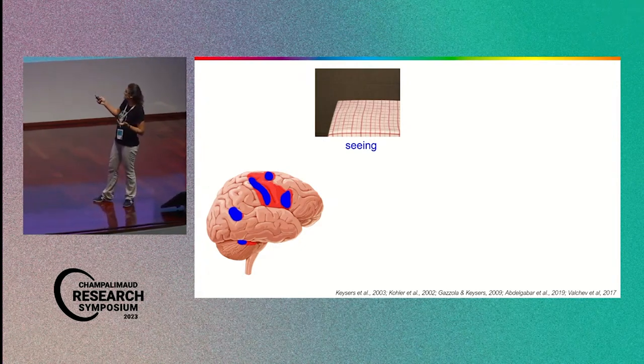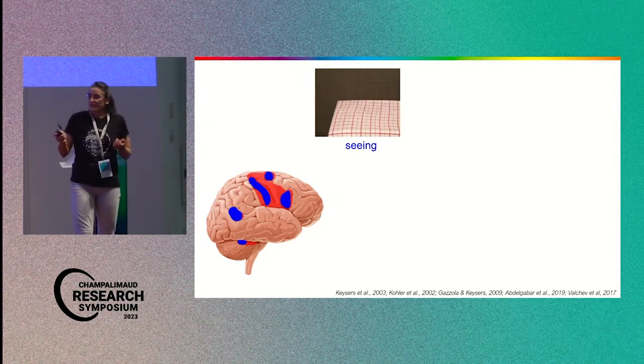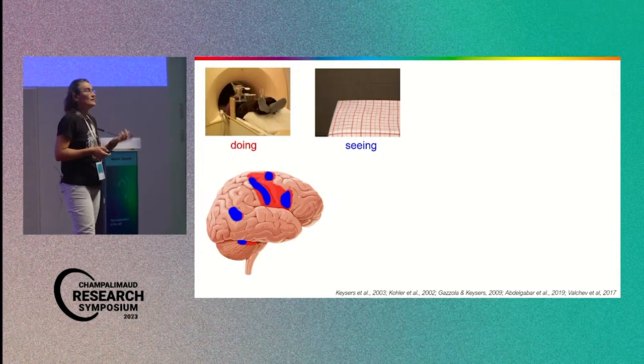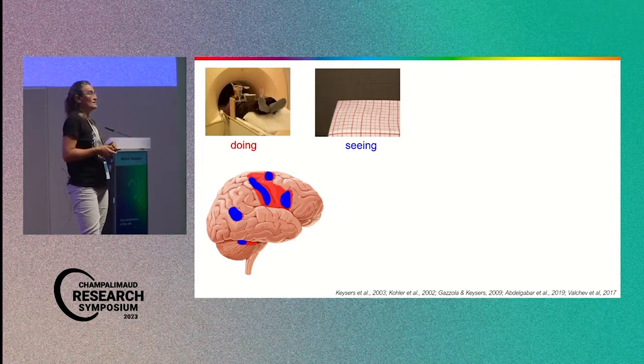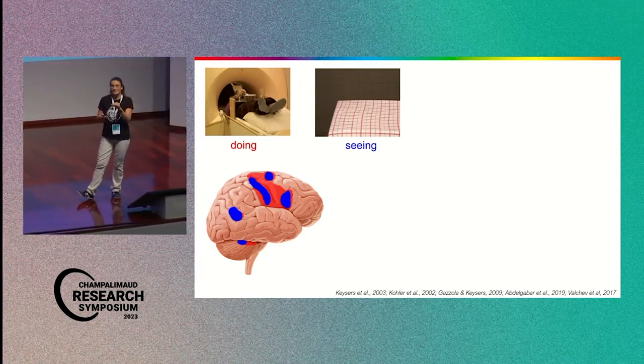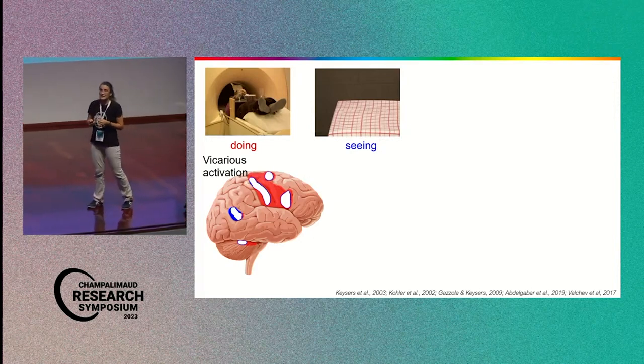At the beginning, we would invite participants to come in the scanner and show them actions like other people performing actions. And then you can map the brain regions that respond to it, that you see here in blue. But what is the red? The red is basically brain activity that is involved in you performing similar actions. If we isolate the voxels that are responding both to you performing an action and seeing somebody else performing an action that you see here in white, you see that the overlap is quite big.